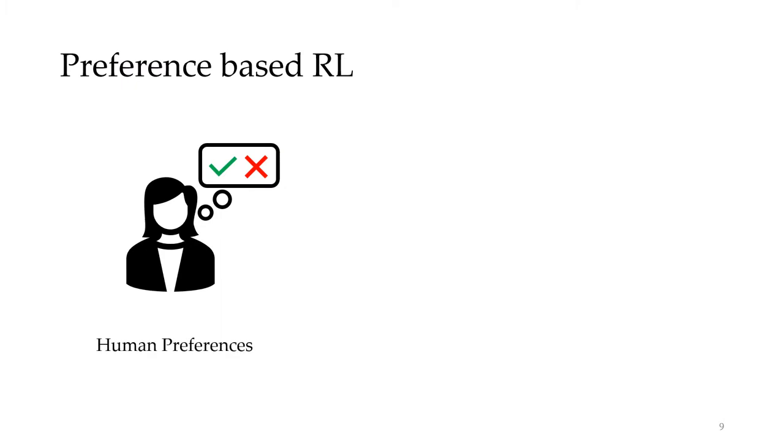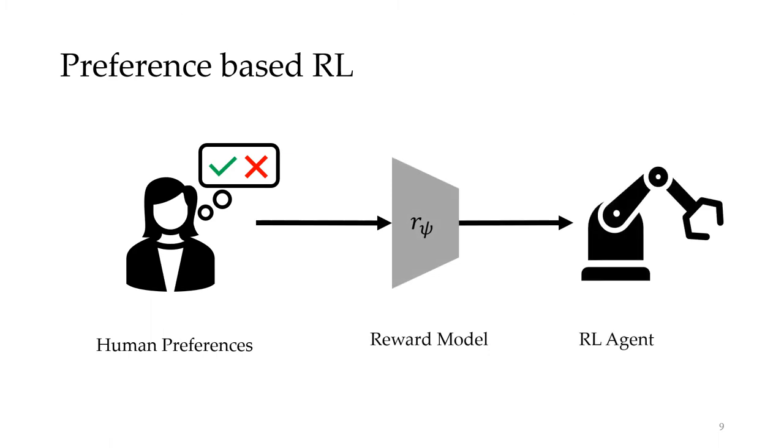To summarize, in preference-based reinforcement learning, human preferences are used to train a reward model, and that reward model can later be used to train a reinforcement learning agent. This has numerous advantages. Human preferences are aligned with user intent and easy to collect, and learned reward models provide dense signals for optimization. Unfortunately, these reward models are hard to learn. Let's talk about why this is.